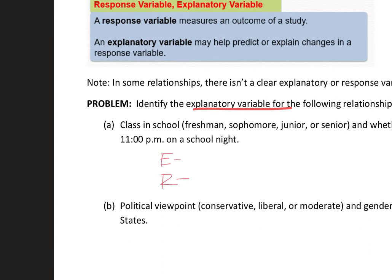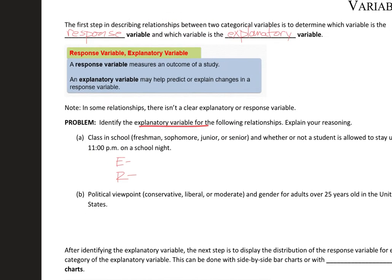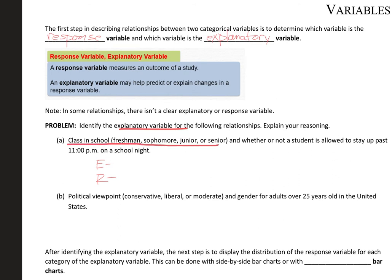First example: class in school — whether you're a freshman, sophomore, junior — versus whether a student is allowed to stay up past 11, so let's call that bedtime. These are two categorical variables: class, and can they stay up yes or no. I would say class is going to be our explanatory and bedtime will be our response, because class is probably explaining bedtime. If someone tells me they have a bedtime of 11:30, I can't automatically assume that's causing them to be a senior.